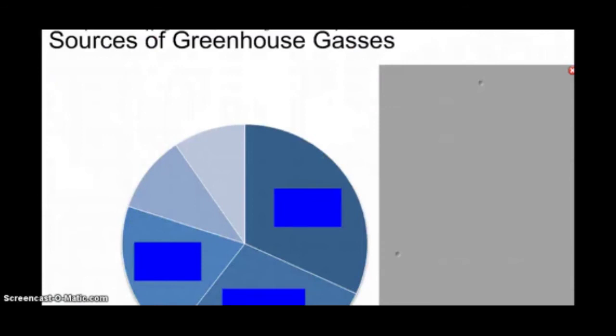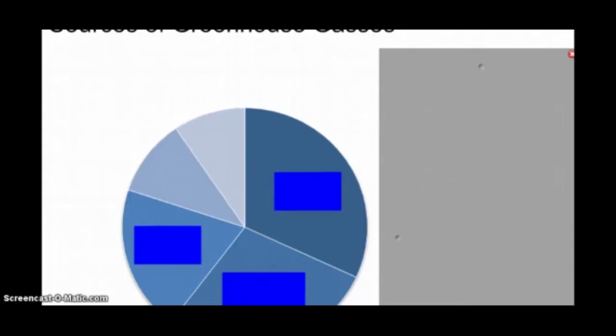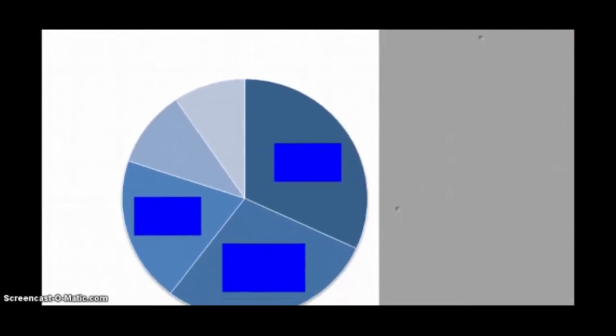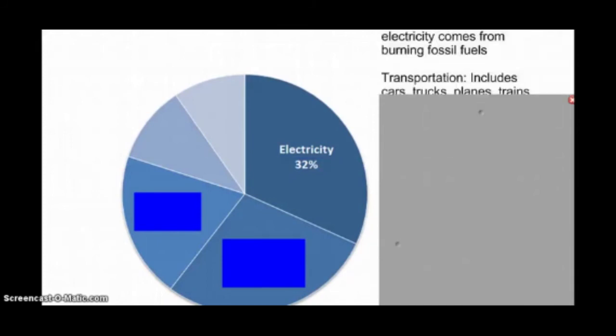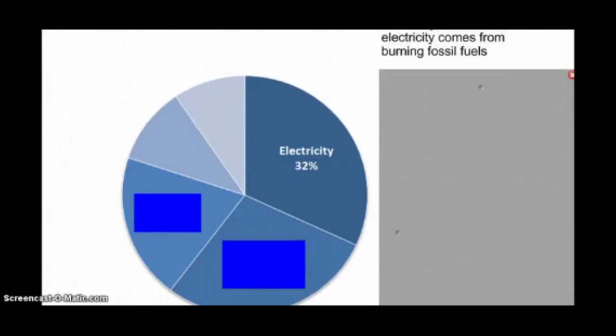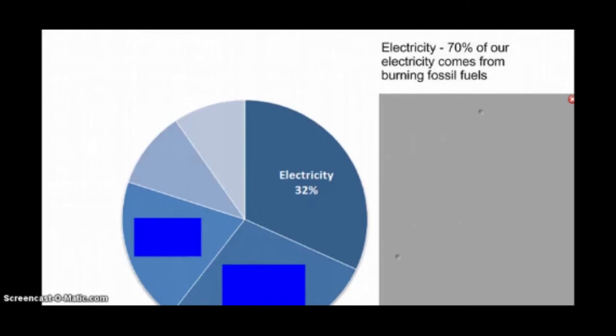So moving on to the sources of these greenhouse gases. The first two sources give off over half the greenhouse gases that we see total. And the biggest source of greenhouse gases that we have is electricity. Electricity mostly comes from fossil fuels. In fact, 70% of our electricity comes from burning fossil fuels.